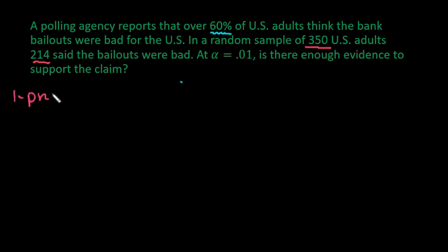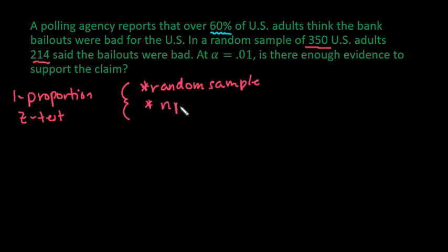So we are going to run a one proportion Z test. In order to run this test, there are a couple of conditions that must be met. The textbook that I currently teach from requires you to have a random sample. And all textbooks that I have taught from require N times P to be greater than or equal to 5, and N times Q has to be greater than or equal to 5. This allows the normal model to kick in so that you can calculate a binomial distribution.